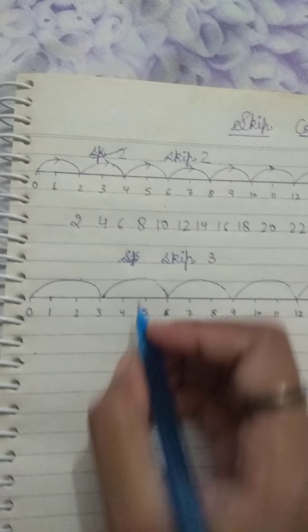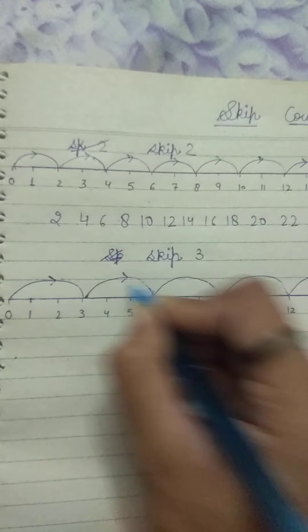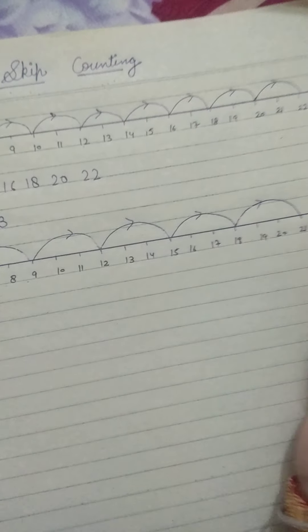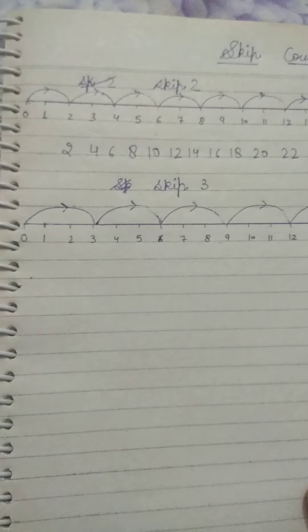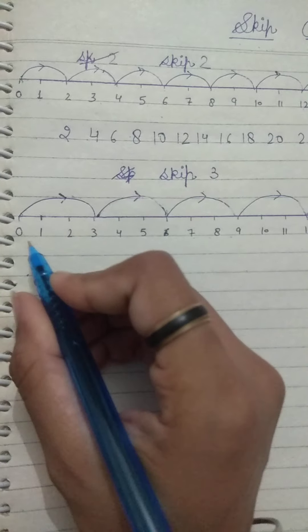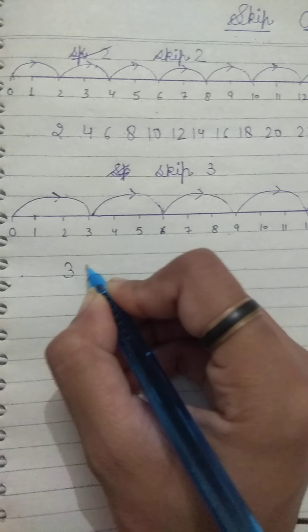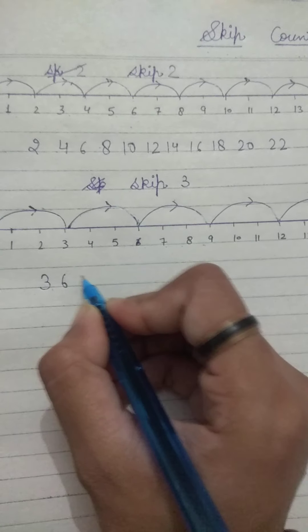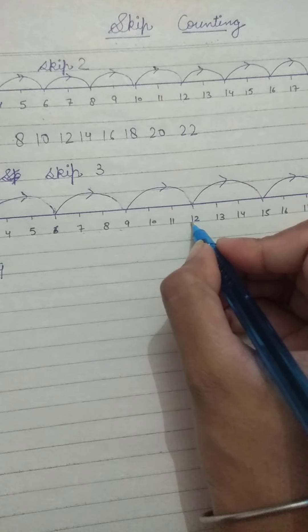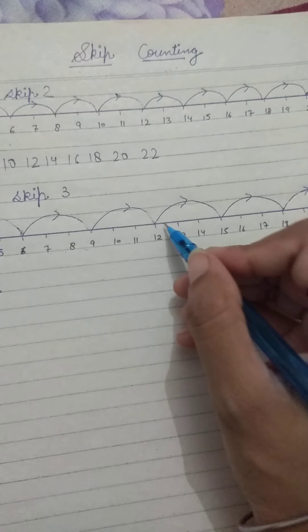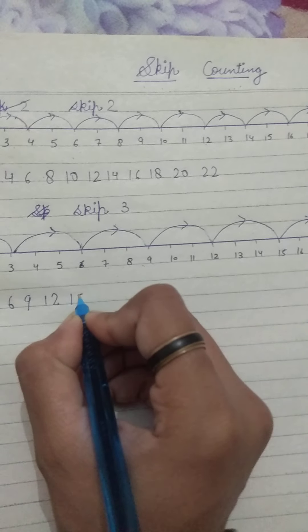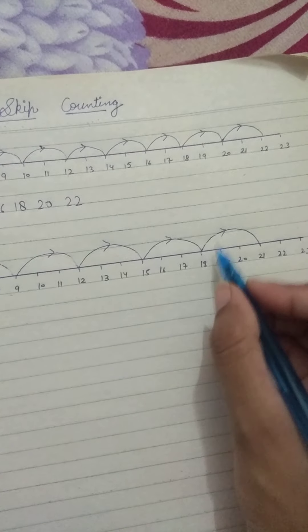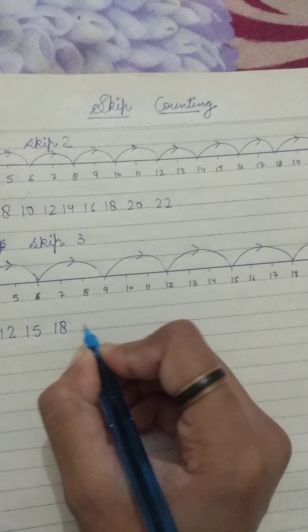We will skip this way — we will jump here. Now we will write the skip counting of 3: 3, 6, then 9. From 9, jump to 12. Then 15. Then 18. Then 21. This way, we complete skip counting.